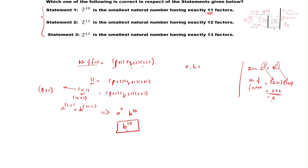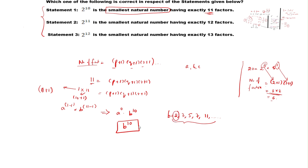B is a unique prime number. We can take B as any prime number like 2, 3, 5, 7, 11, and so on. But we need the smallest natural number, so we take the smallest prime number, which is 2. Therefore 2 to the power of 10 is the smallest natural number having exactly 11 factors. So statement 1 is true.